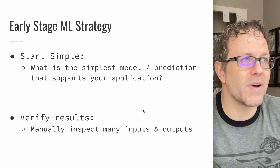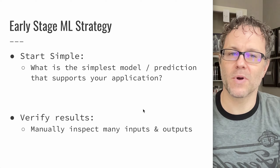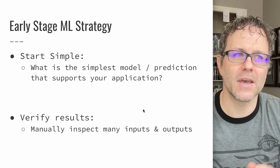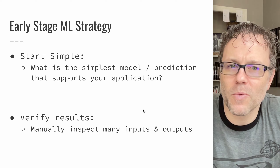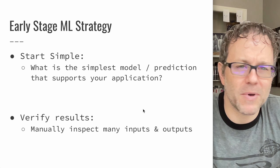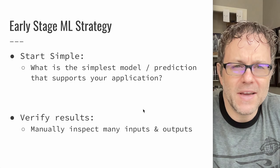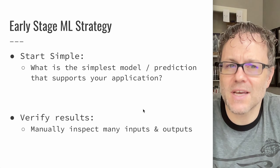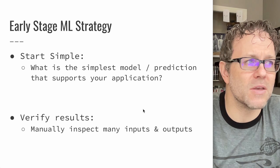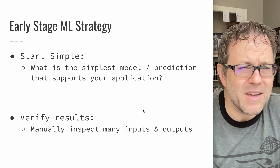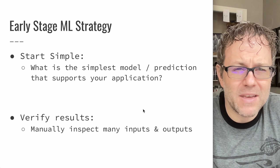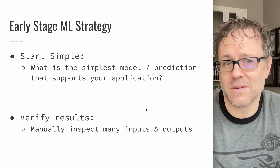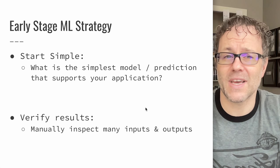A lot of times you might find yourself in a sort of tunnel vision where you've got the right model, the right data, and you've trained everything. But then when you get it out into the real world and the application tries to utilize it, you find that the real world has different inputs or different context. The way that you accept data into your model may not be quite what you thought when you were training and evaluating it in a testing setting.